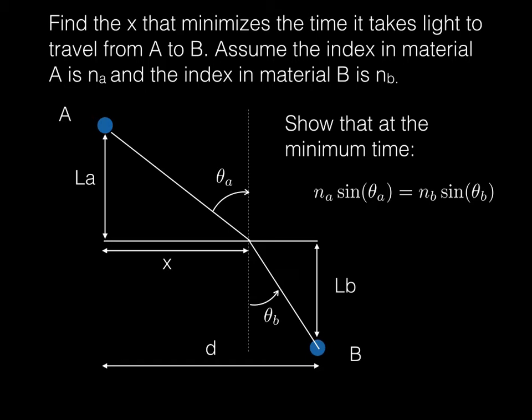So Fermat's principle says that when light goes from point A to point B, it takes the path that requires the least amount of time. And the notion is that we have in this upper area an index n_a, so n_a is the index of refraction up here, and n_b is the index of refraction down here.